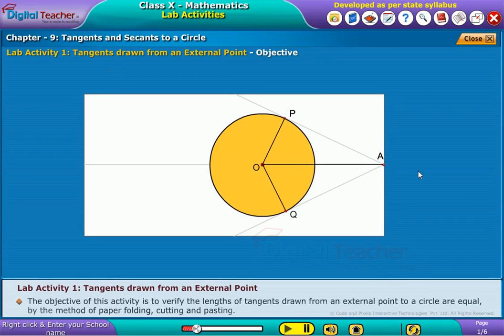The objective of this activity is to verify the lengths of tangents drawn from an external point to a circle are equal by the method of paper folding, cutting and pasting.